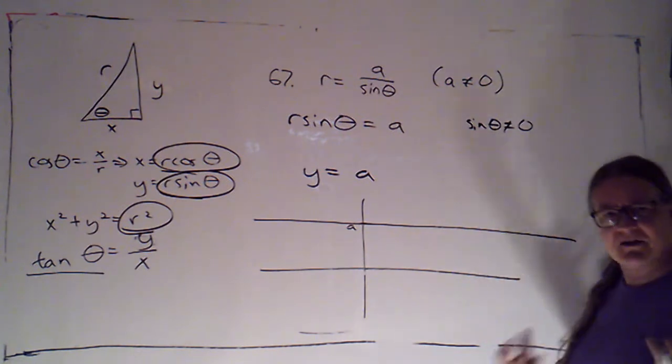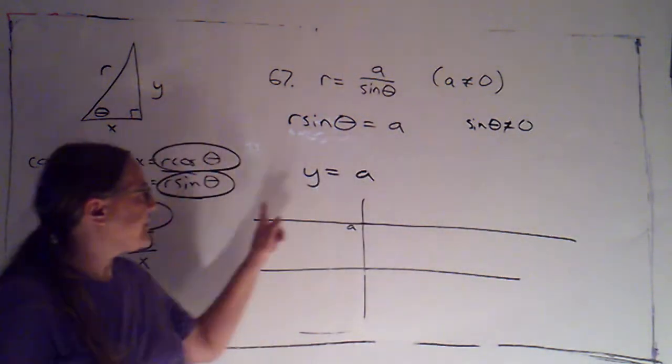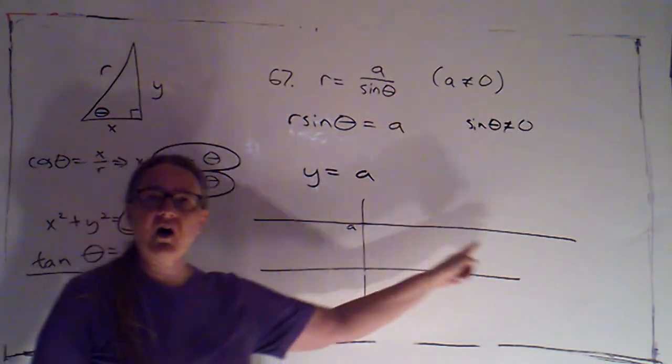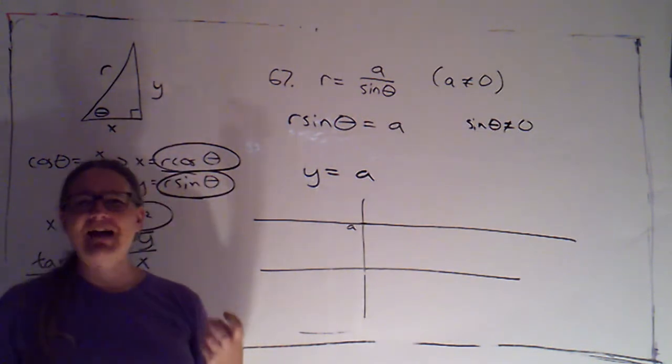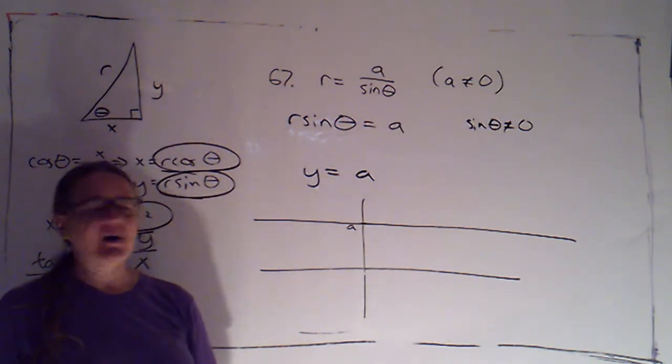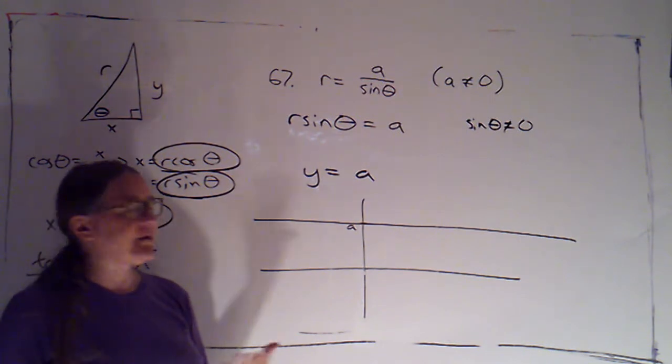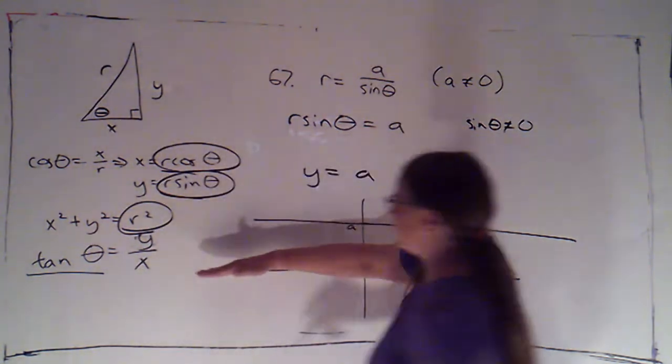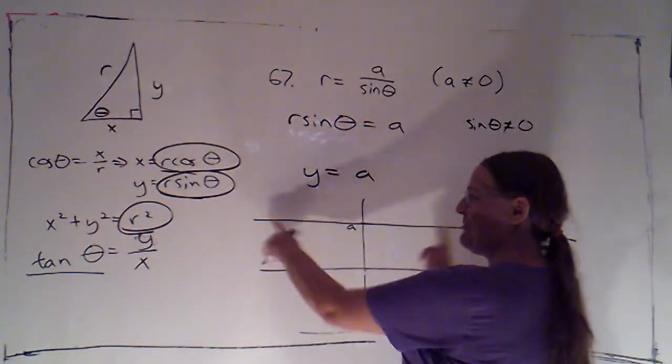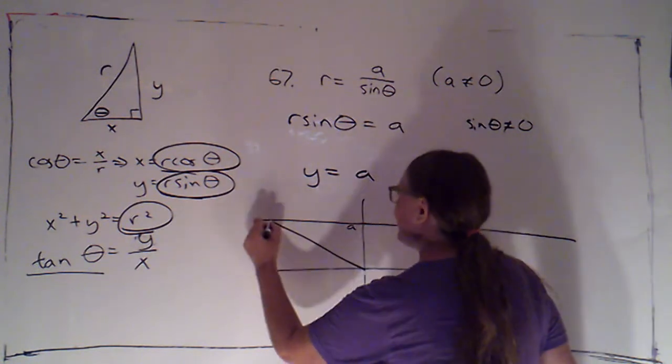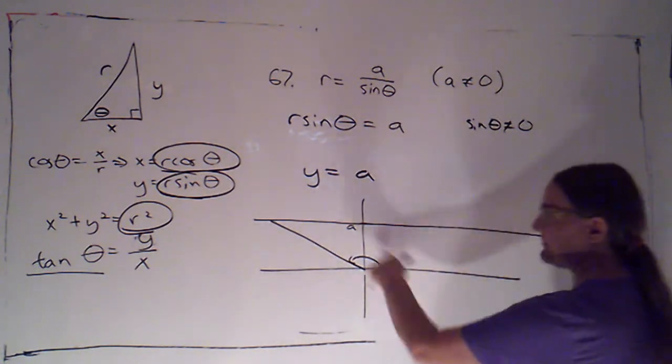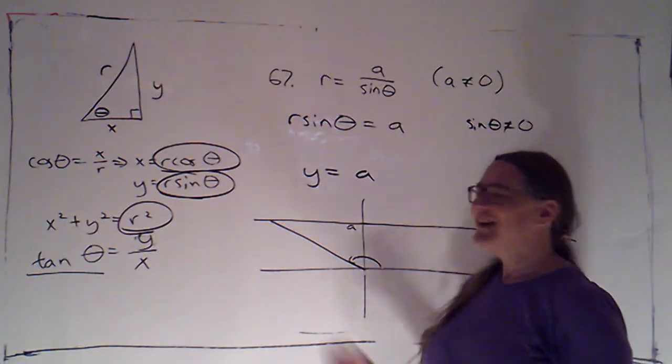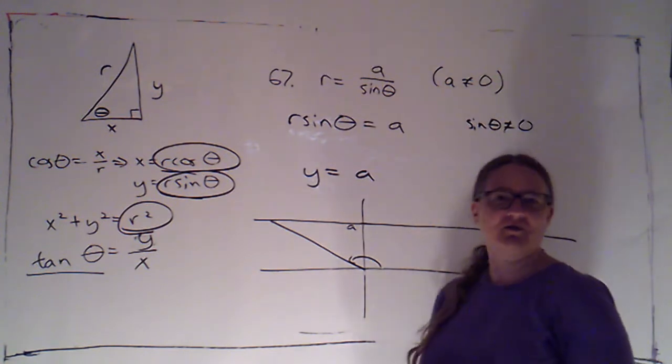So you'll notice, we said there were these restrictions that sine of theta couldn't be zero. Well, there's no point on this line where the polar coordinates would have an angle of theta where sine would be zero, because sine is only zero at multiples of pi. So that's angles that are coterminal with zero, or angles that are coterminal with pi. None of which point to a point on the line. If I have a point on the line, I could have something like this, where I've got an obtuse angle, or I could have an acute angle, but I can't have a multiple of pi. So it's kind of neat to see that that restriction sort of just takes care of itself.